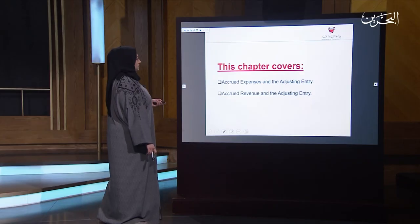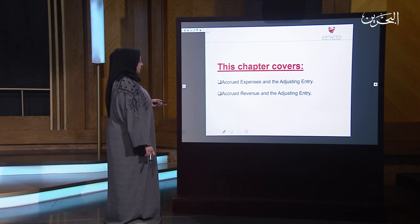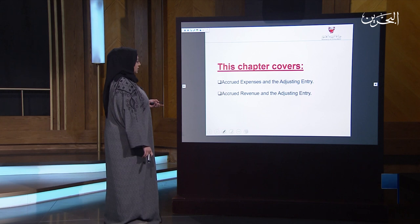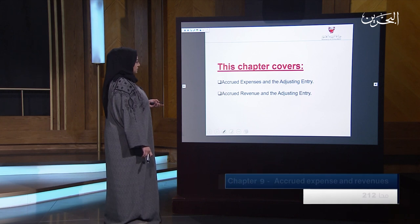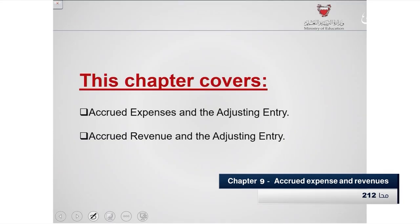This chapter will cover two objectives. The first objective is accrued expense for the adjusting entries. The second objective is accrued revenue for the adjusting entries.